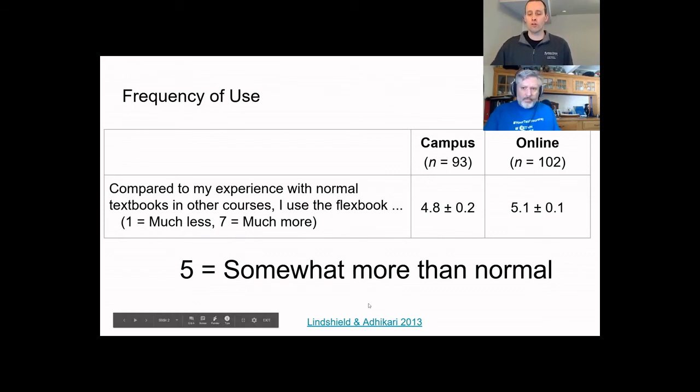So you see this is from an article in 2013. And you can go, as you get those shared with you, you can go access that URL if you want to afterwards. But one of the questions we asked the students was, compared to my experience with a normal textbook in other courses, I use, at that time I referred to the resource as the Flexbook. And so that's the resource that I created. And so there's a scale from one to seven, a Likert scale. And so they could answer anywhere from much less to much more. And they answered, you see, somewhere around a five for both my campus and online students. And so five means somewhat more than normal.